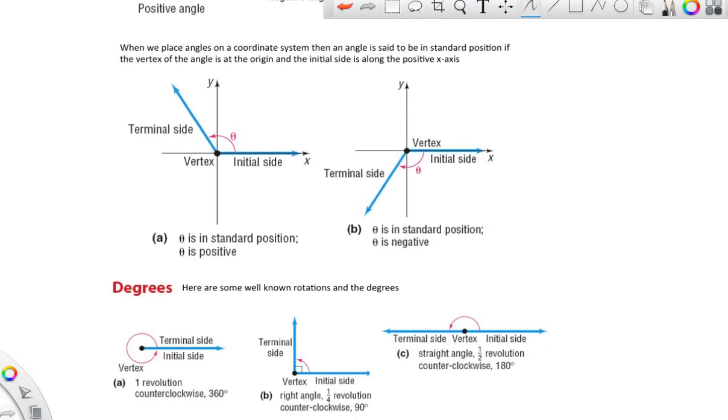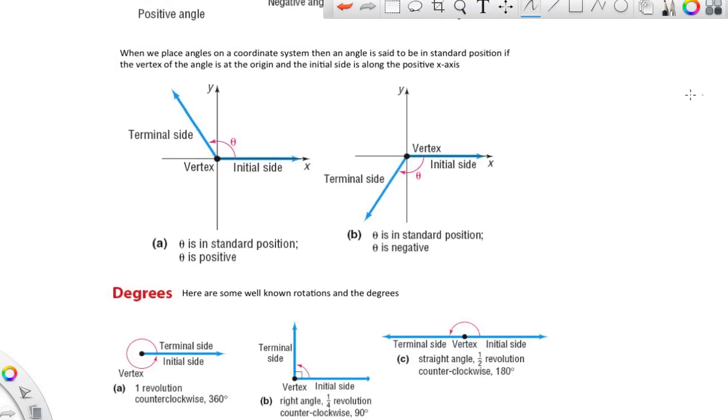Some students struggle a little bit with when is it positive, when it's negative. Well, if you think of starting on a positive x-axis, if you let's put the angle and the rotation on an xy coordinate system, then if you rotate up from there, then up should be positive, right?